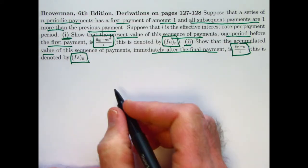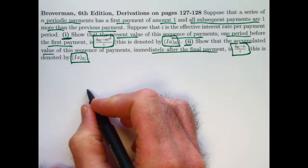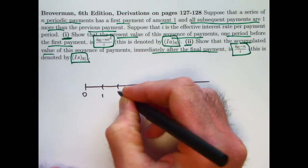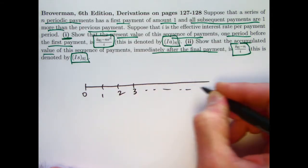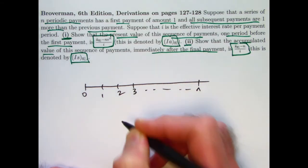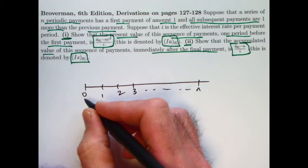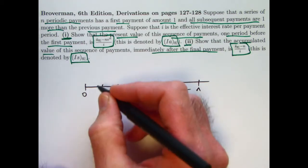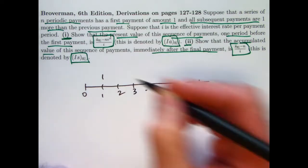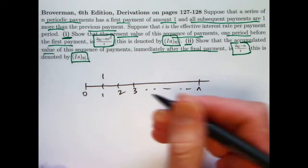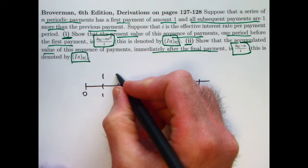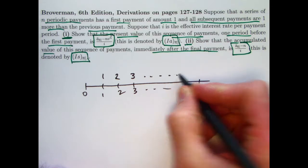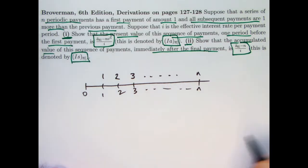These formulas are a bit strange, but they are true. Think about a timeline here. We've got n periods. We're going to be evaluating the present value one period before the first payment, so the present value will be evaluated at time 0, and the first payment of 1 will be at time 1. And then we keep increasing these payments by 1.